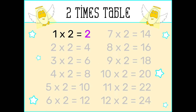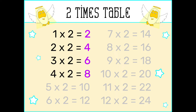One times two is two. Two times two is four. Three times two is six. Four times two is eight. Five times two is ten. Six times two is twelve.